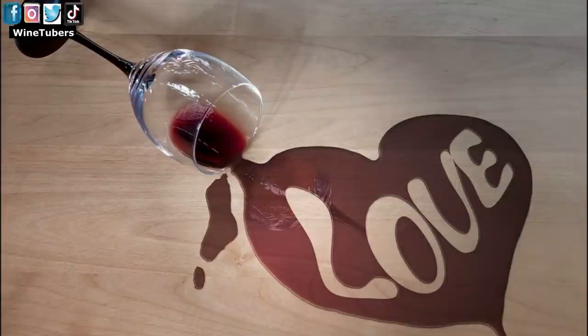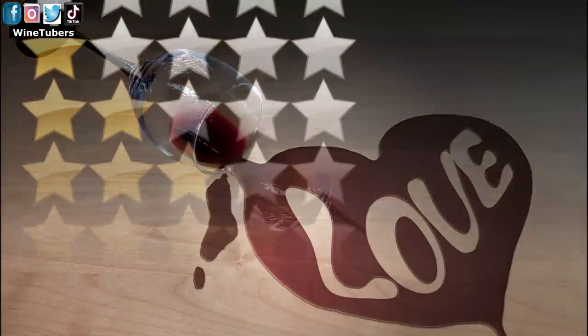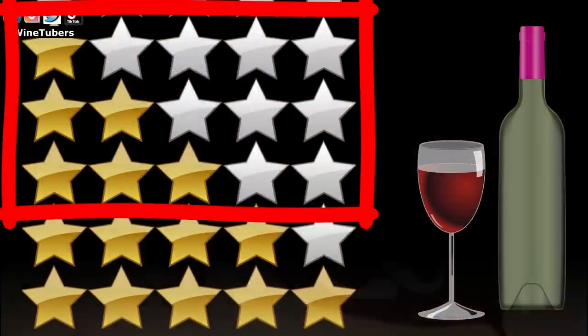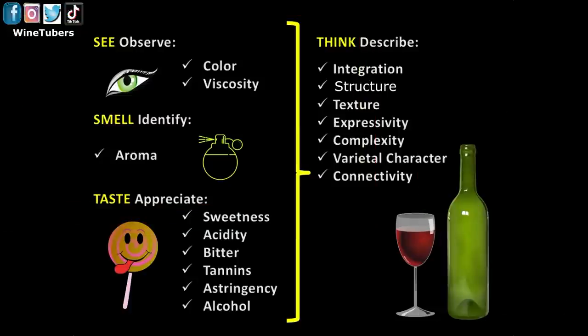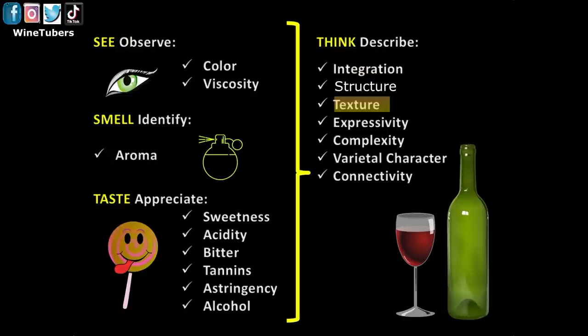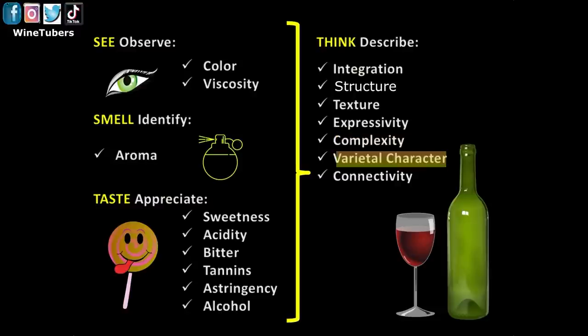For example, it is possible to love a particular wine while knowing it is not an excellent wine. To continue our evaluation, let's analyze the following fundamental qualities: integration, structure, texture, expressiveness, complexity, varietal character and connectivity.